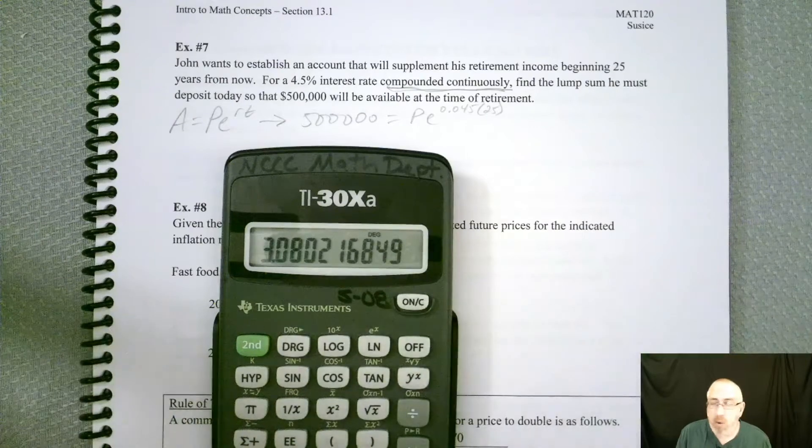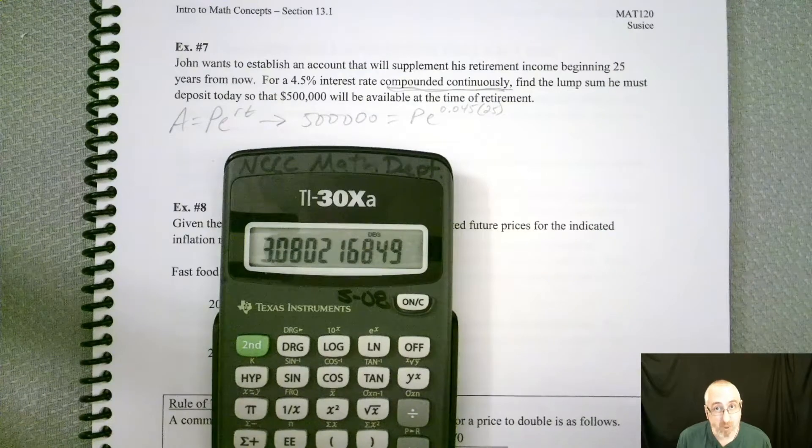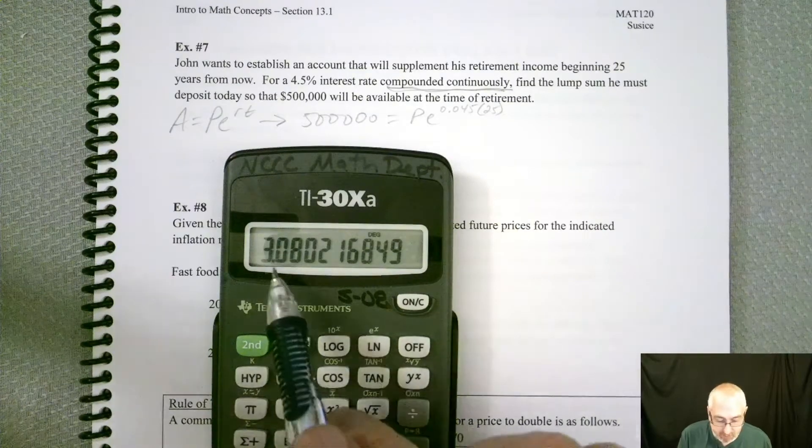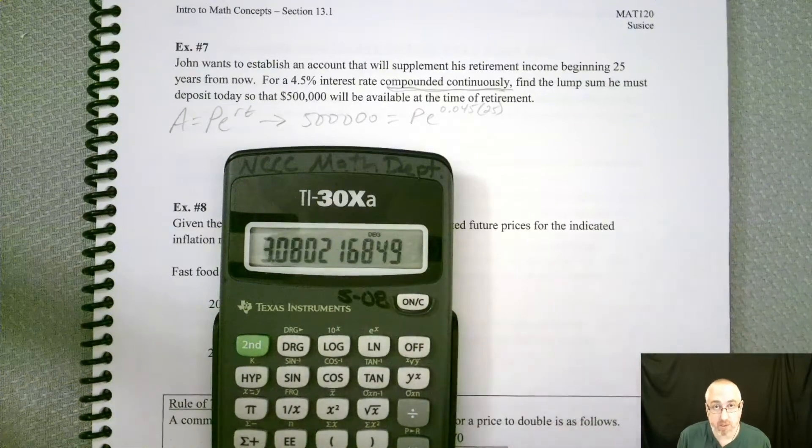And again, you might say, well, can't we just round that off? Is it really going to make that much of a difference? Unfortunately, it will. Well, if you rounded that off to 3.08, then it's not going to be the same as if you had all those extra decimal places, and I'll show you.